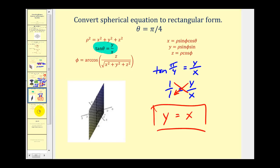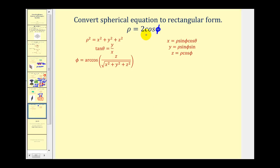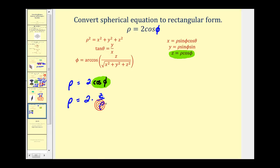Let's take a look at one more. Here we have rho equals two cosine phi. We want to convert rho equals two cosine phi into rectangular form. If we look at this equation and solve for cosine phi, we'd have cosine phi equals z divided by rho. Performing that substitution, we have rho equals two times z divided by rho, which gives us rho equals two z divided by rho. Cross multiplying, we'd have rho squared equals two z.